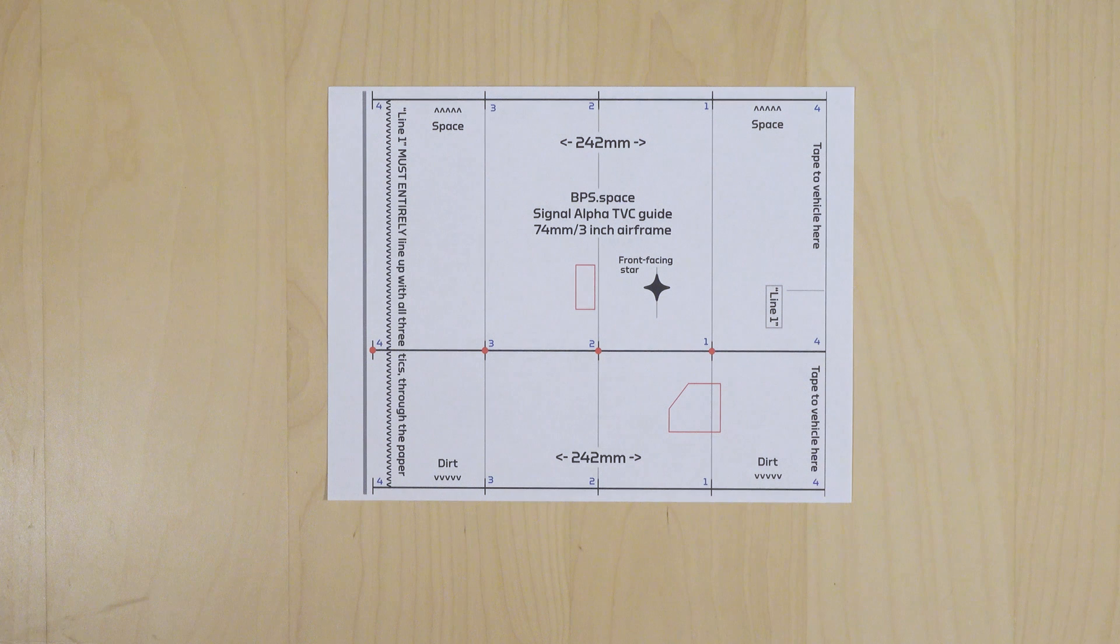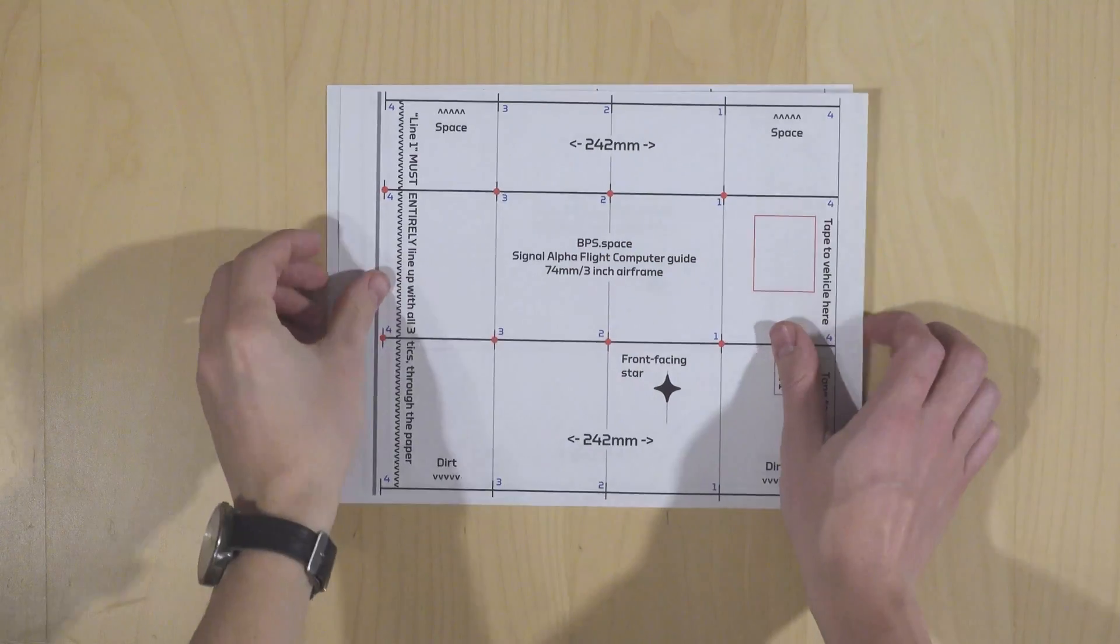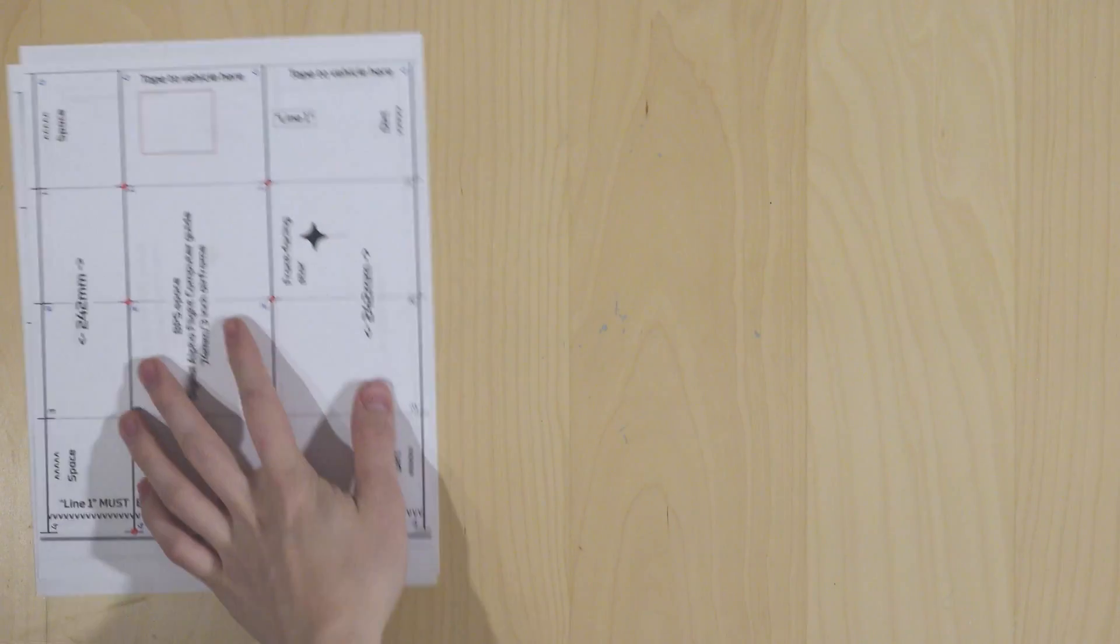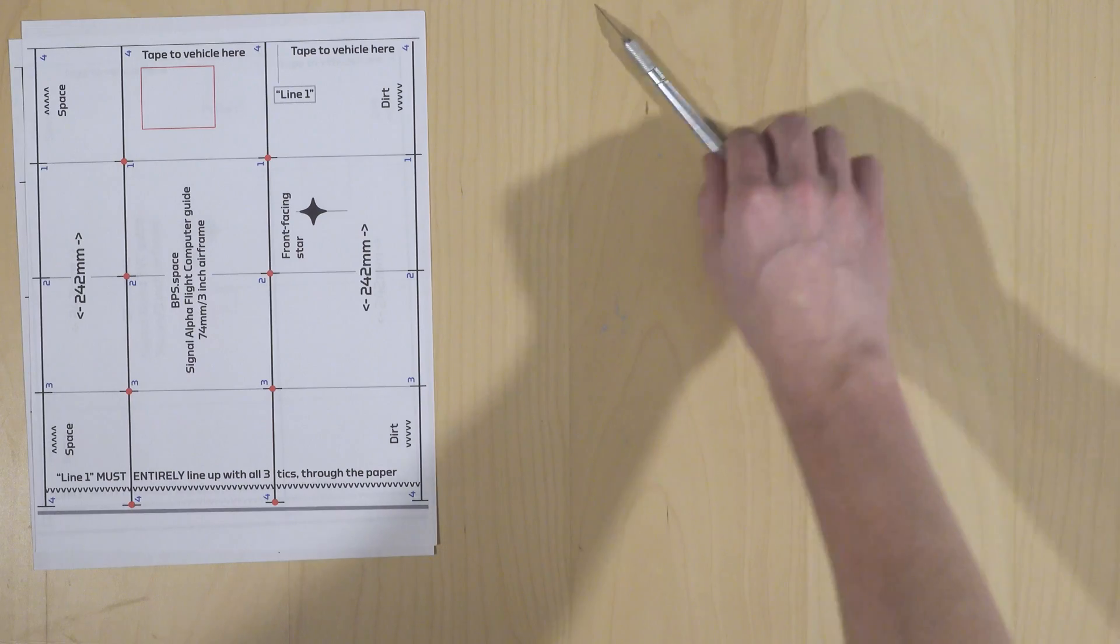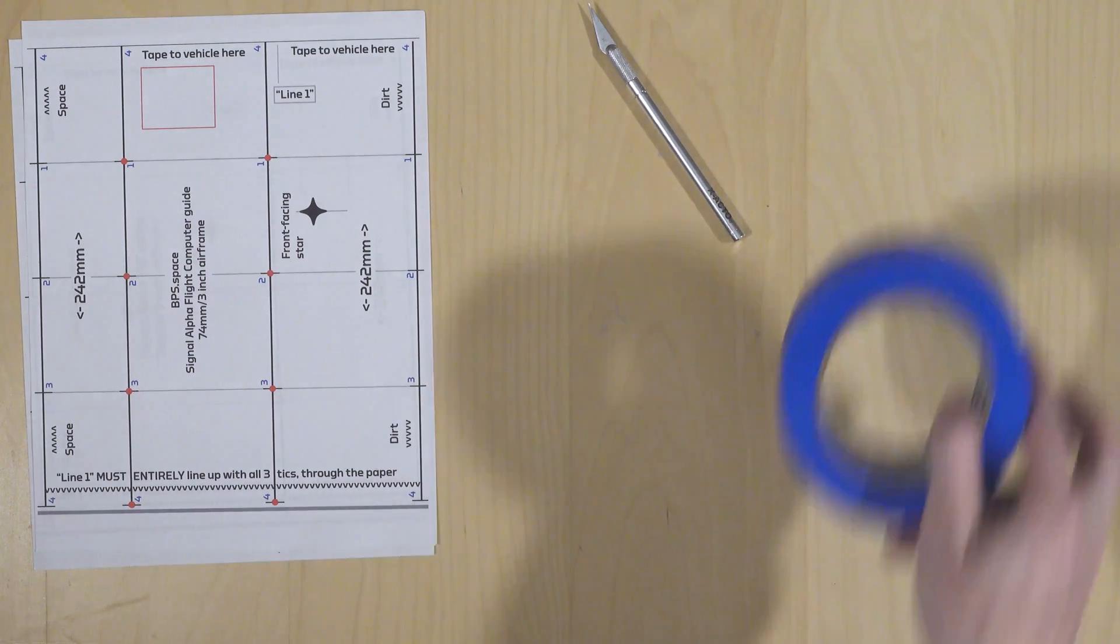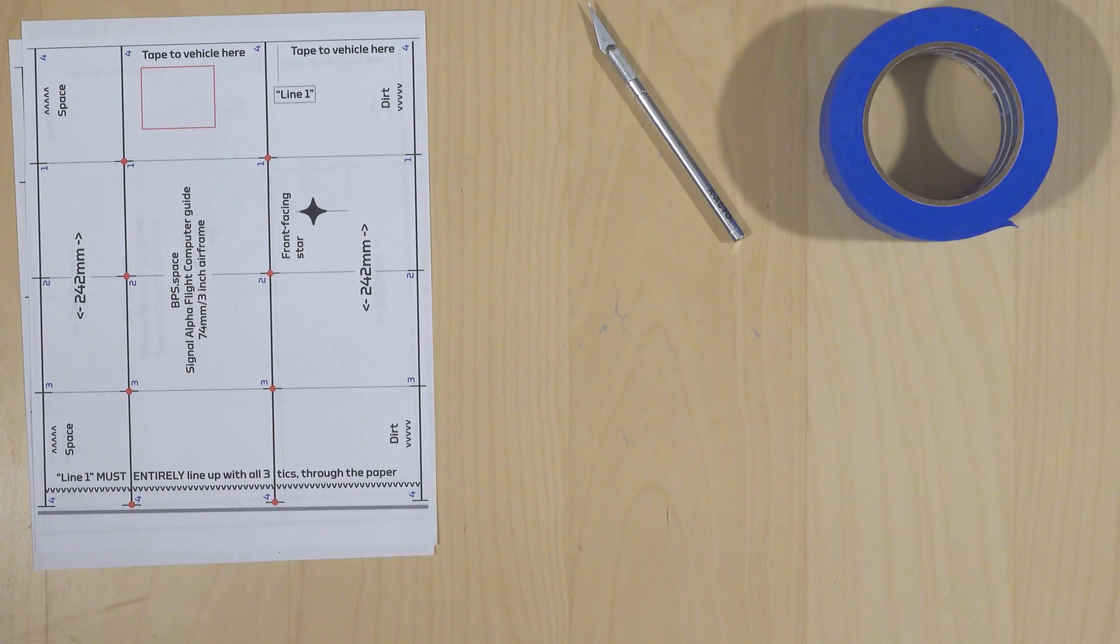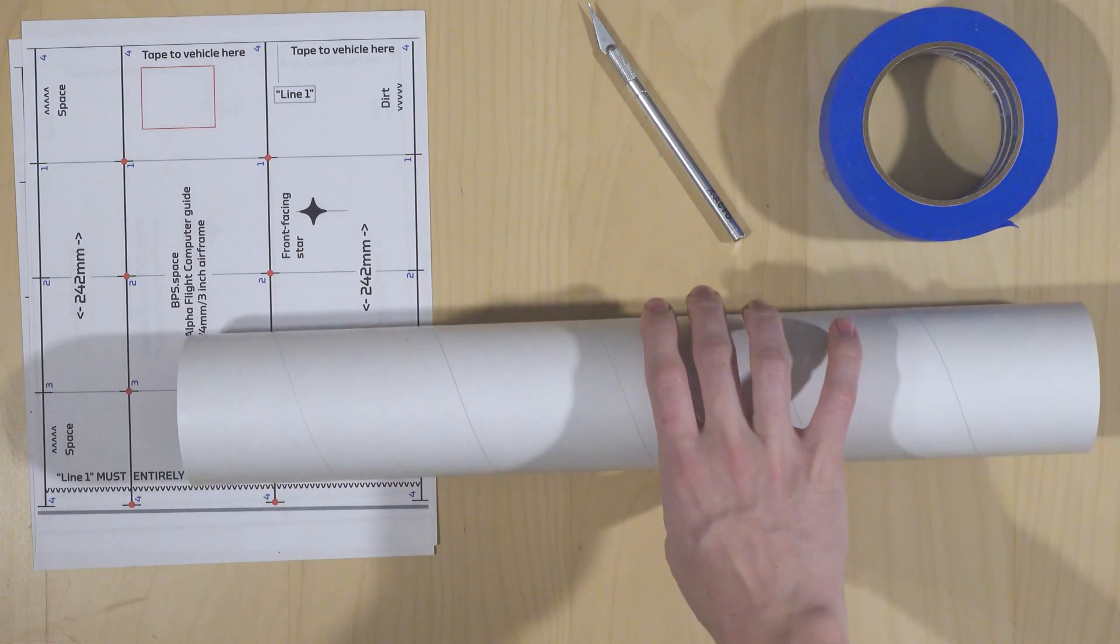It's time to build the actual rocket. Included in your Signal Alpha kit are two guides. One is for the thrust vectoring mount, the other is for the flight computer. These guides will help you make cuts, incisions, and drills in the right places. To get started, we'll need a hobby knife, some painter's tape, and, of course, your rocket airframe.